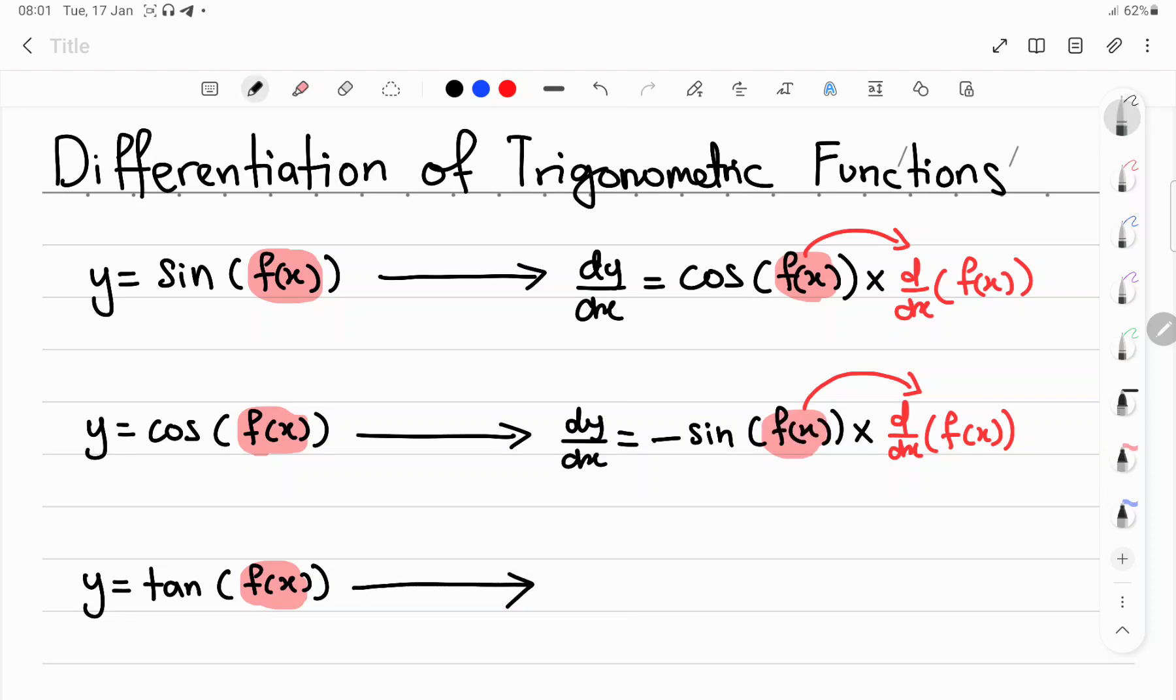And last but not least, tangent. For tangent, the dy/dx is secant squared. This time it has square, so you have to be careful. And then multiply by the differentiation of the function inside the bracket.